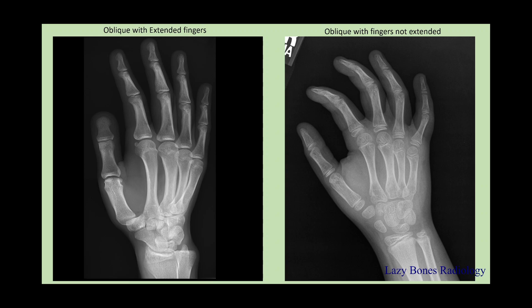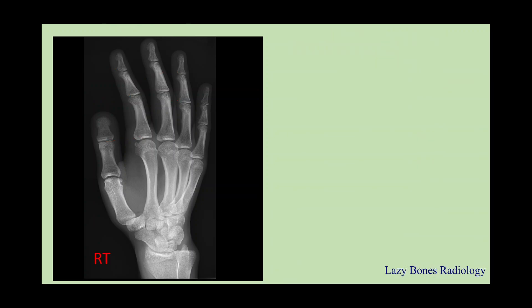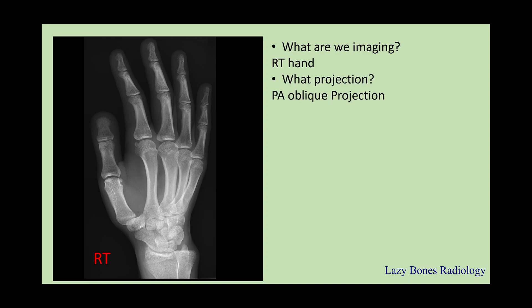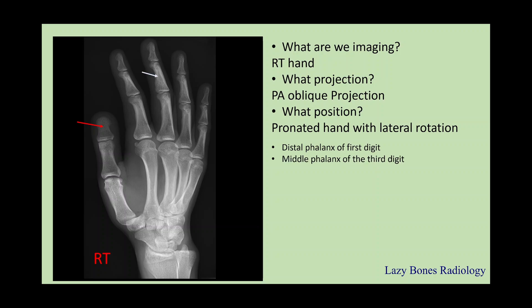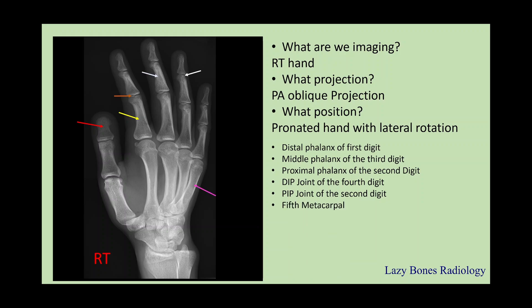Now let's look at the difference between the extension and the regular obliques. Do you see the difference? You are able to evaluate the joint space within the phalanges on the extended oblique, while in the regular oblique the joint spaces are being obstructed. Now let's practice: what are we imaging? This is the right hand. What is the projection? This is a PA oblique projection. What is the position? The hand is pronated with lateral rotation. Now let's practice anatomy: distal phalanx of the 1st digit, middle phalanx of the 3rd digit, proximal phalanx of the 2nd digit, DIP joint of the 4th digit, PIP joint of the 2nd digit, 5th metacarpal, 3rd MCP, radius, and ulna. I know it's becoming repetitive, but it's very important you understand the anatomy.